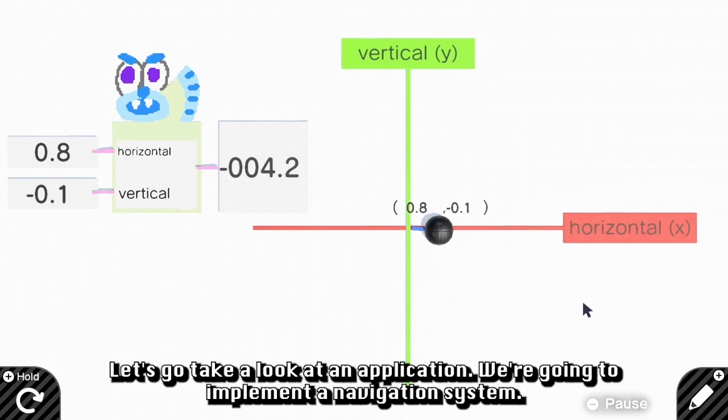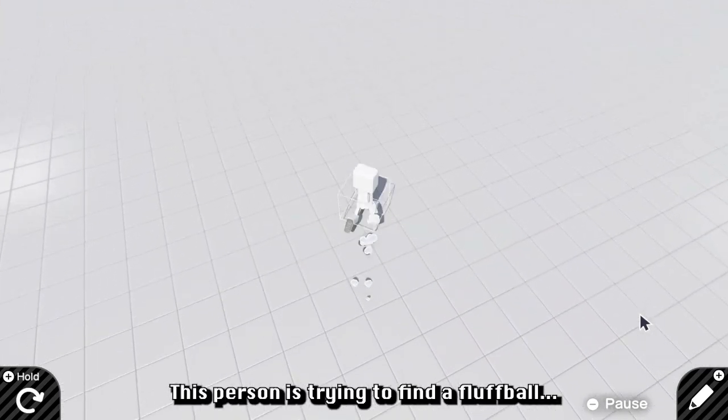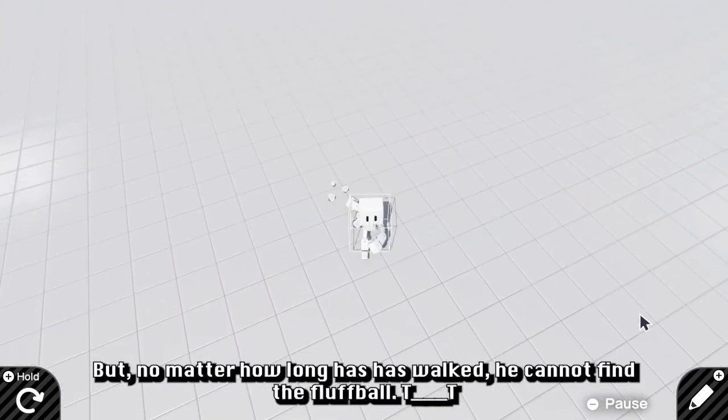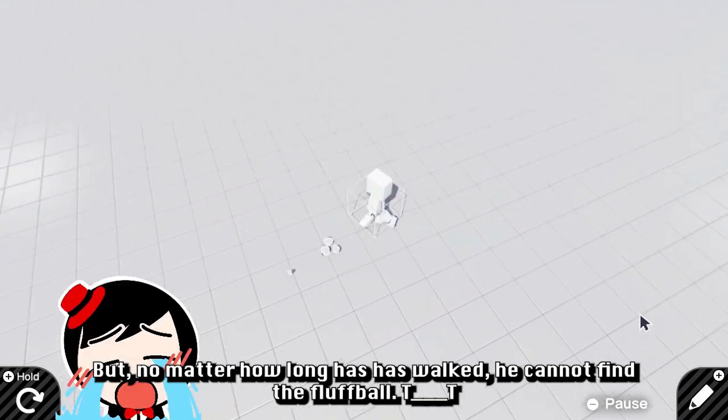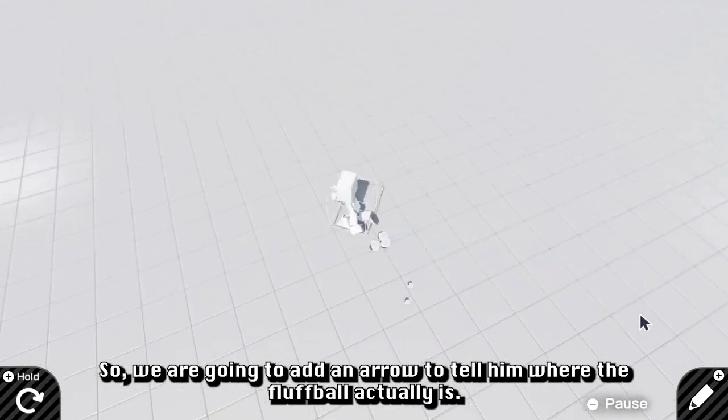Let's go take a look at an example. We are going to implement a simple navigation system. This person is trying to find a fluff ball, but no matter how long he has walked, he cannot find the fluff ball. So we are going to add an arrow to tell him where the fluff ball actually is.